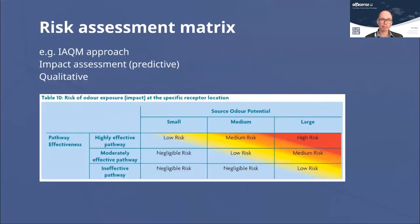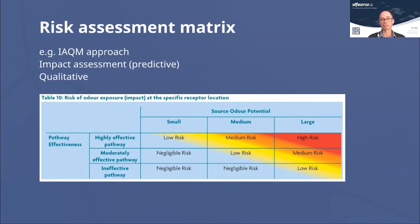The risk assessment matrix, taken from the IAQM odour guidance, is an impact assessment approach used to predict what level of odour impact is likely to occur from a certain facility. It is a qualitative approach involving an assessment of the source odour potential and how effective the pathway is likely to be, which are then combined using the risk matrices in the document to produce a level of risk. It is quite often used as a screening assessment prior to dispersion modelling, which is found to be needed in the case of higher-risk activities.